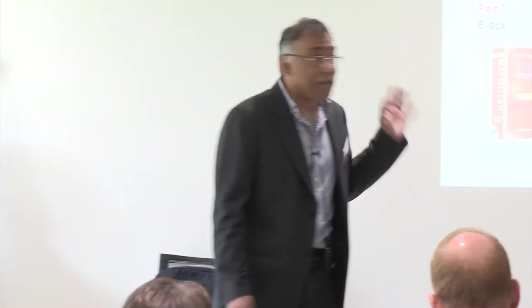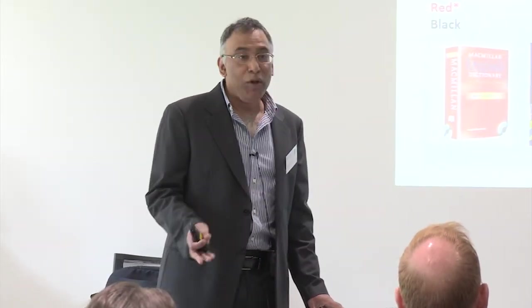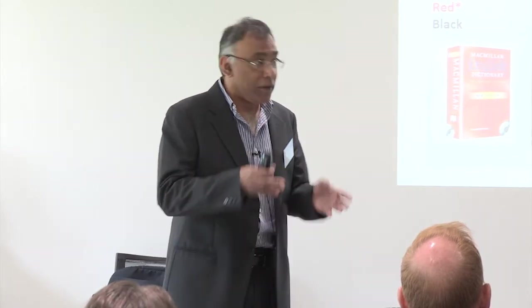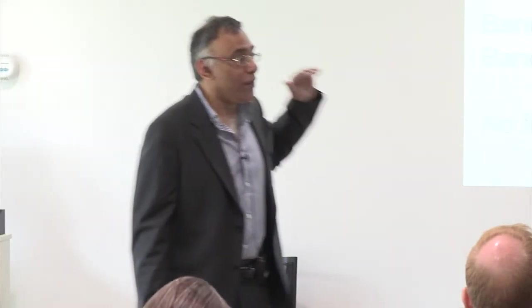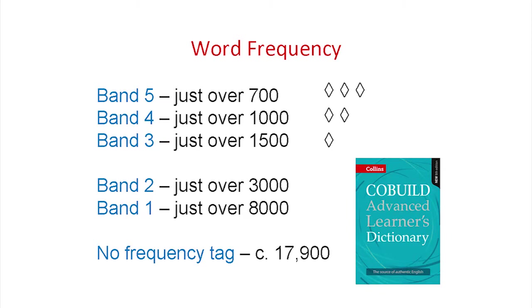All the different dictionaries have different systems. I'll focus on one particular system. If you get the dictionary, you have a system of diamonds to show frequency. If you go to the website, it's a different system — divided into little circles showing frequency. And if you go into the actual numbers, this is what you see. That will break down how you can see right the way through five bands of frequency. If the word's not in a frequency band, it will not have a diamond next to it.